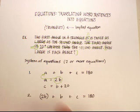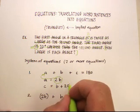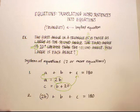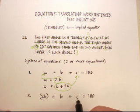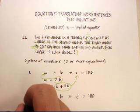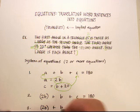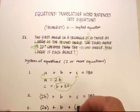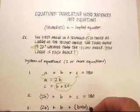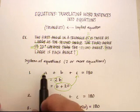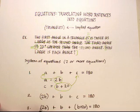So now I need to replace this C. So what do I know about C? C is equal to B plus 20. So I'm going to put that in right there. And now let's go ahead and put it in there as well. I'll put this in my third sentence. So 2B plus B plus B plus 20 is equal to 180. Now look what I've done. I've translated my A plus B plus C into all B variables. Now I can solve for B.